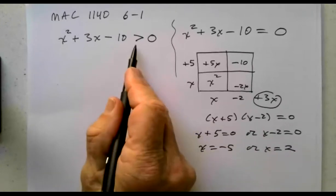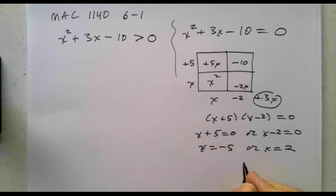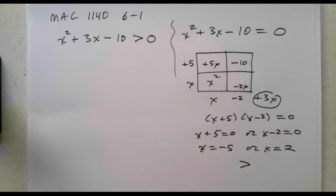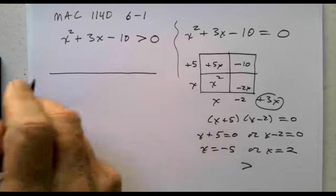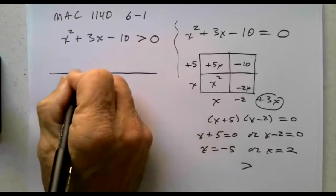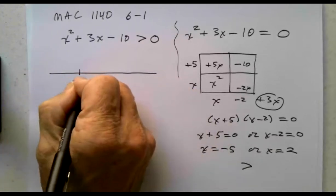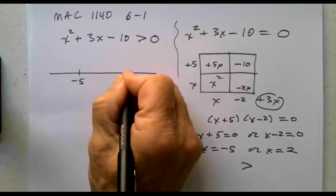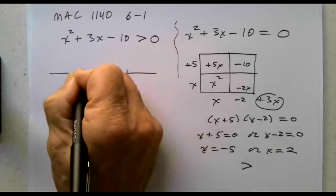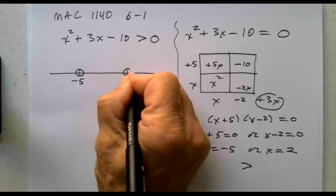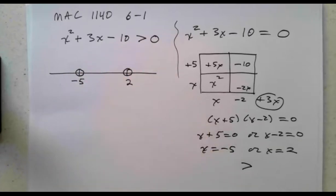Notice the inequality sign here is strictly greater than. That tells us to use open circles for each of those values on the number line. So here's negative 5 and here's 2, both with open circles.